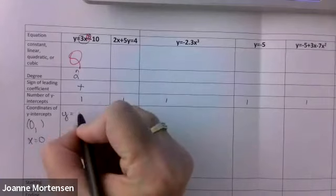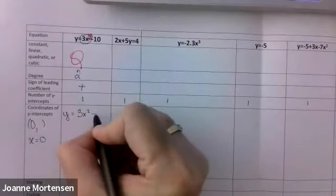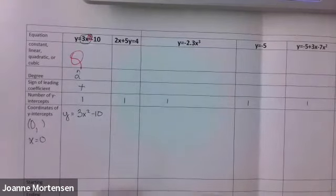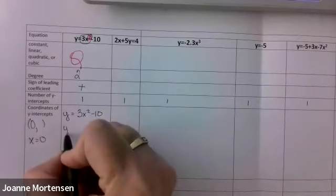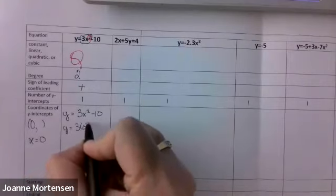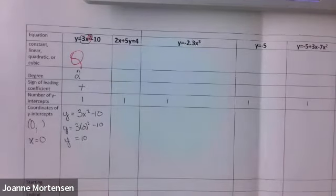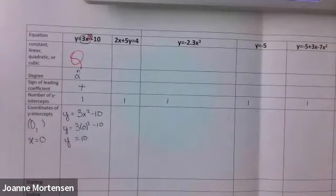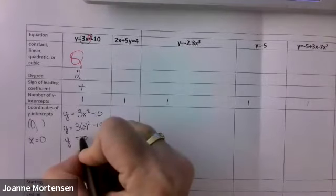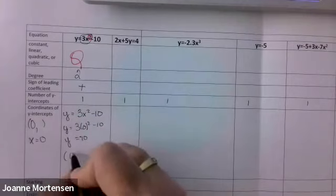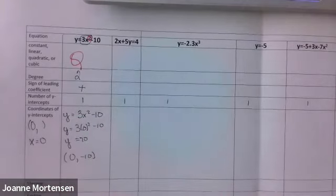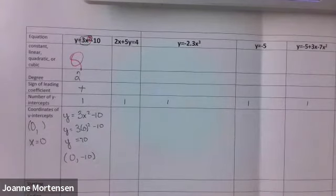We take the equation, put a zero where x is: y equals three times zero squared minus ten. Zero squared is zero, times three is still zero, so y equals negative ten. I lost my negative — so we get zero and negative ten. When I ask for coordinates, I want a point: negative ten gets part marks, but zero and negative ten gets full marks.